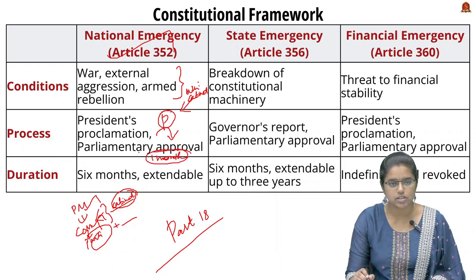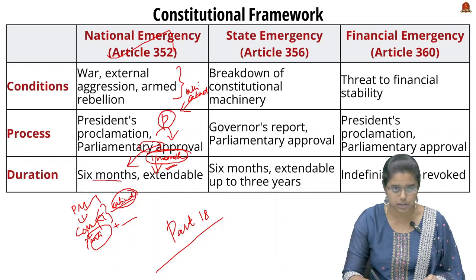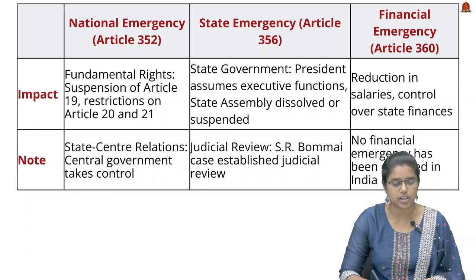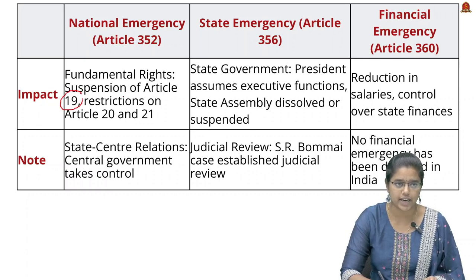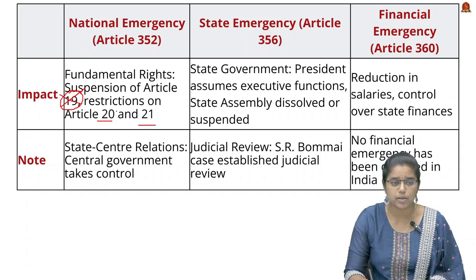The National Emergency can be extended up to six months with the approval of Parliament, and further extended to an indefinite period with further Parliamentary approval. With the declaration of National Emergency, Article 19 — which gives freedom of speech and expression — will be suspended. However, Articles 20 and 21, which provide protection against conviction of offenses and the right to life and personal liberty, cannot be suspended.